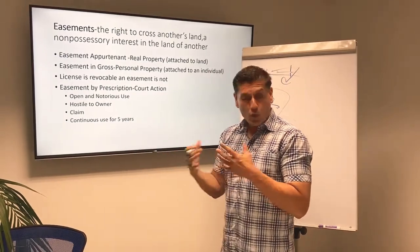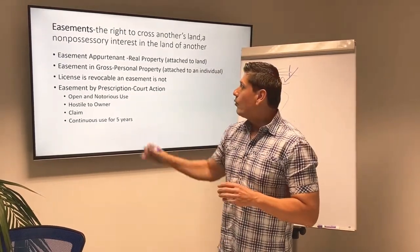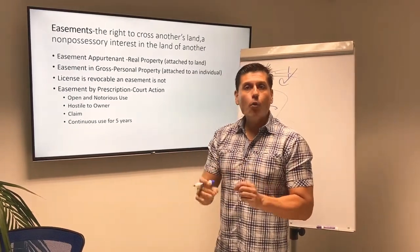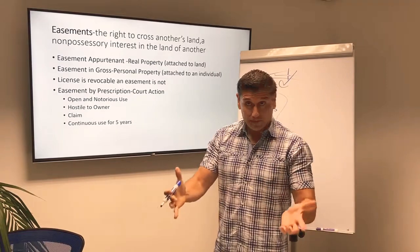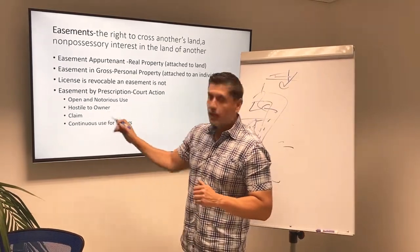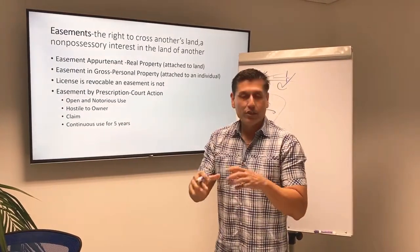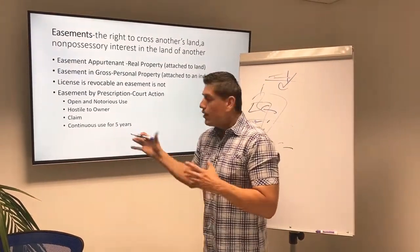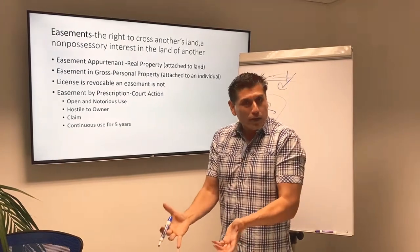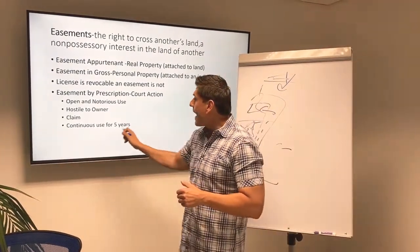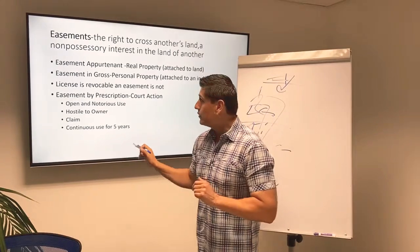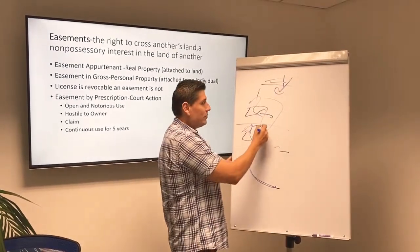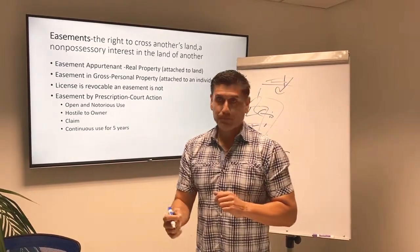There are some requirements for an easement by prescription. Number one, you have to use that neighbor's driveway in what we call open and notorious use, meaning anyone could tell you're using it. Hostile to the owner — you don't have to get in a fight, it just means they're saying don't and you're doing it anyway. You have some claim, some reason why you're doing this. And you're doing this for five years — after five years, you could go to court and try to get an easement by prescription.